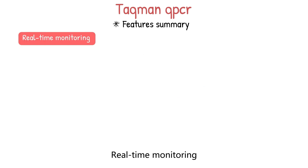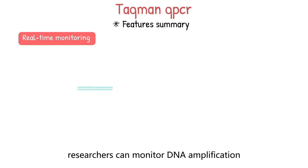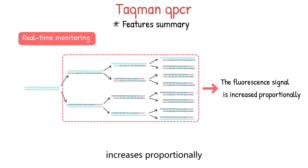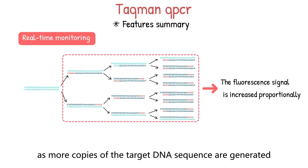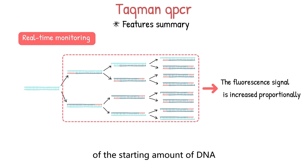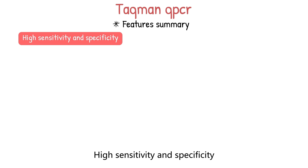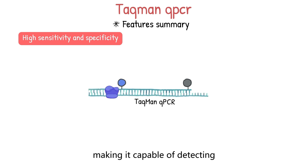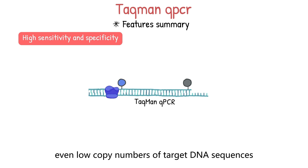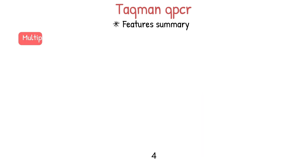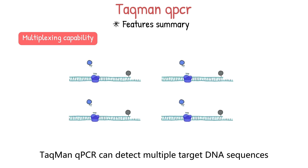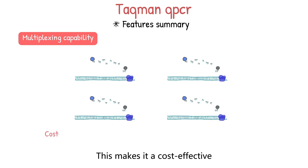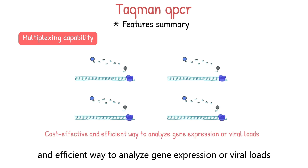Two is real-time monitoring. With TaqMan qPCR, researchers can monitor DNA amplification in real-time during the PCR cycle. The fluorescent signal from the reporter molecule increases proportionately as more copies of the target DNA sequence are generated, allowing for precise quantification of the starting amount of DNA. Three is high sensitivity and specificity. TaqMan qPCR is highly sensitive and specific, making it capable of detecting even low copy numbers of target DNA sequences in complex mixtures of DNA. Four is multiplexing capability. TaqMan qPCR can detect multiple target DNA sequences simultaneously in the same reaction, making it a cost-effective and efficient way to analyze gene expression or viral loads.